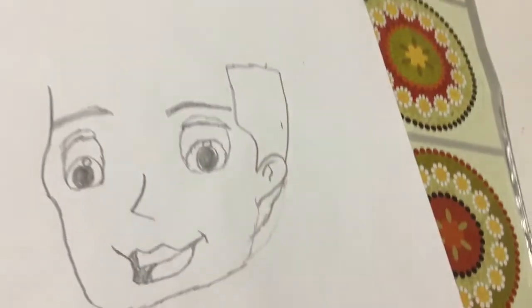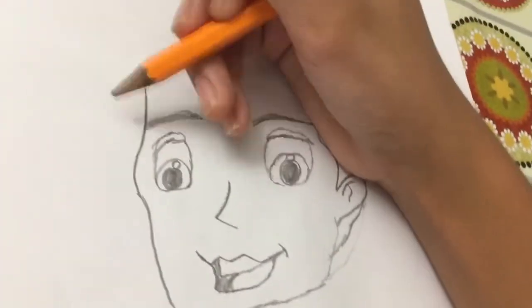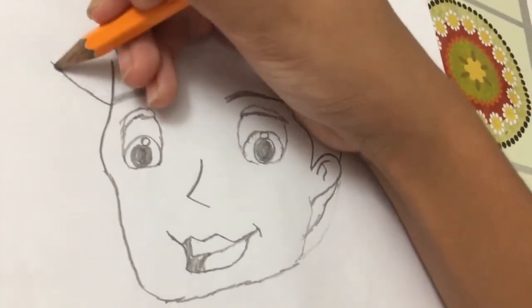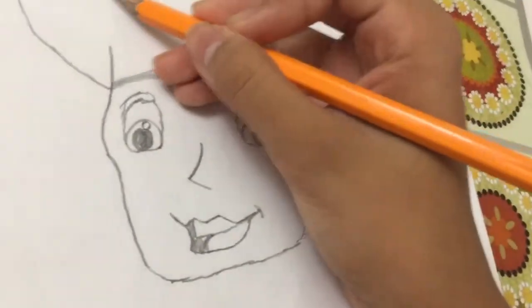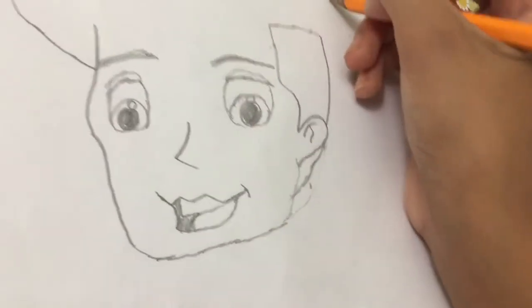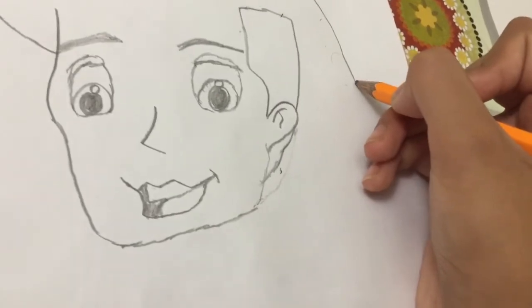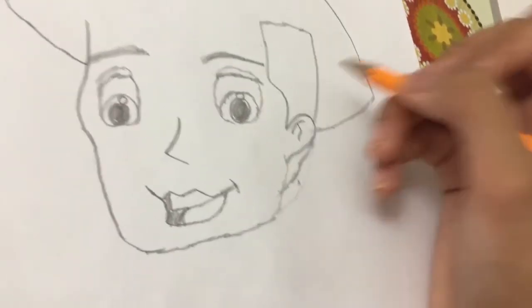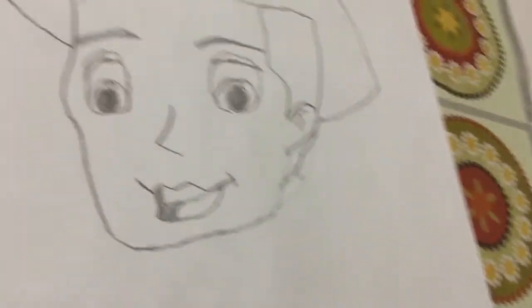And next, we're going to draw his hat. So his hat, it comes from here. And go up. And down. Up. And there. And then we're just going to make a line right here. Like that.